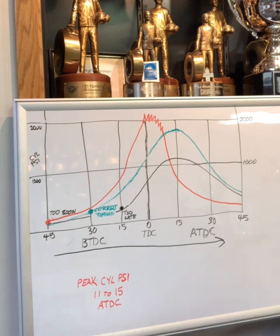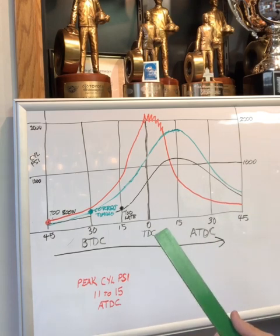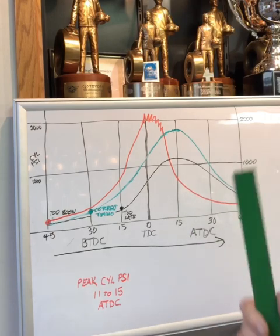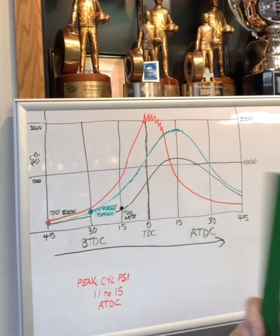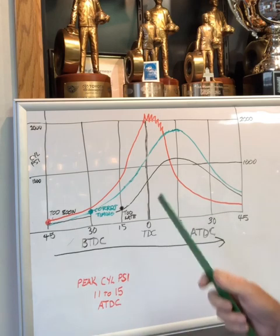You can look up on the internet, it'll tell you what the stoichiometric numbers are for the gasoline and for the E85 and for methanol and for nitro. But that's not what your engine may want. You've got to move it, advance or retard, you've got to add fuel, richen it and lean it to get the most power and the best performance.